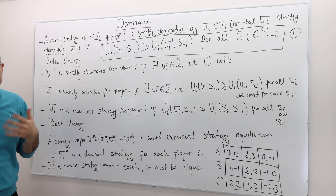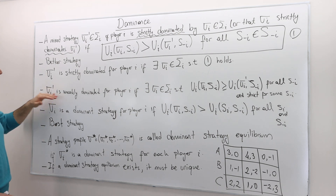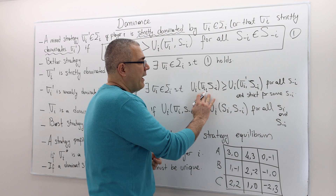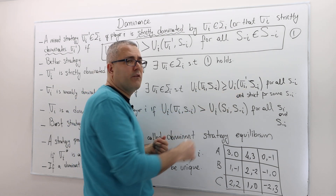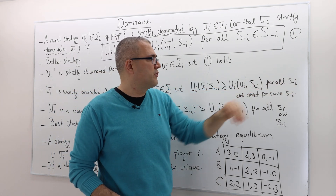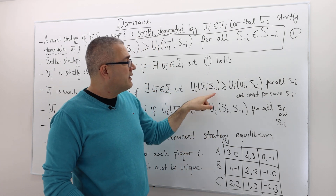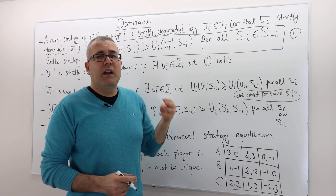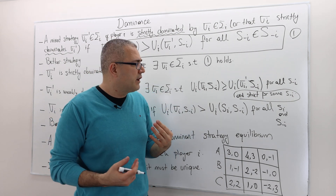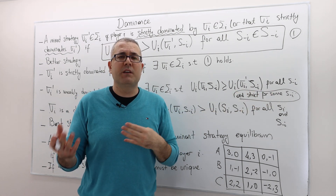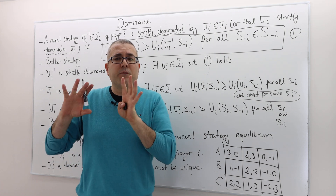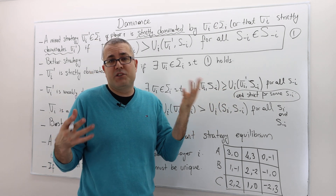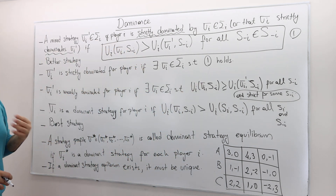What about weak domination? Sigma_i_prime is weakly dominated for player i if there exists another strategy sigma_i such that player i's payoff of playing sigma_i is greater than or equal to his payoff of playing sigma_i_prime, regardless of his opponent's strategy — for every s_minus_i — but this inequality must be strict for some s_minus_i. Without that second part, every strategy would weakly dominate itself, so we have to break the ties: for some cases sigma_i must be strictly better, while for many other cases they're just equal.